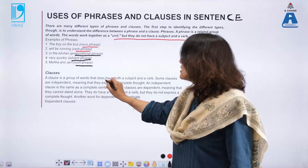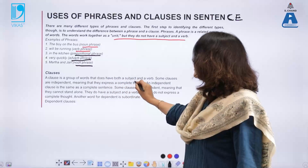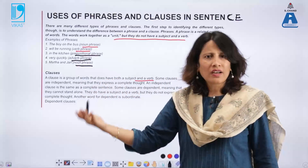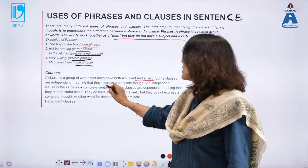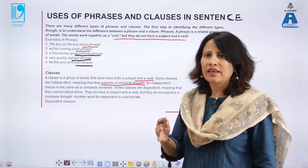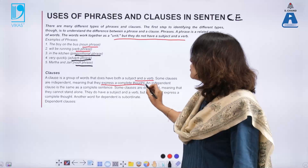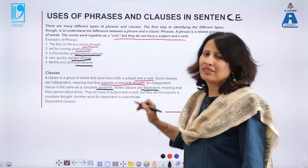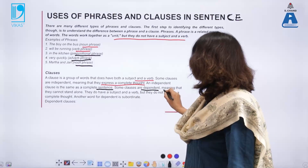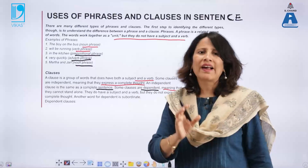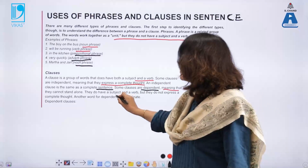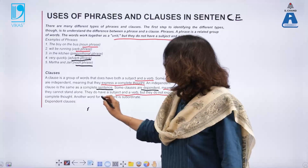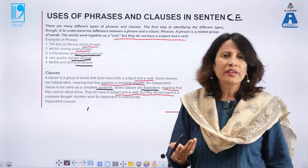A clause is a group of words that does have both a subject and a verb. Some clauses are independent, meaning they express a complete thought in themselves — an independent clause is the same as a complete sentence. Some clauses are dependent, which means they cannot stand alone independently. They have a subject and a verb, but they do not express a complete thought. Another word for dependent clause is subordinate clause.